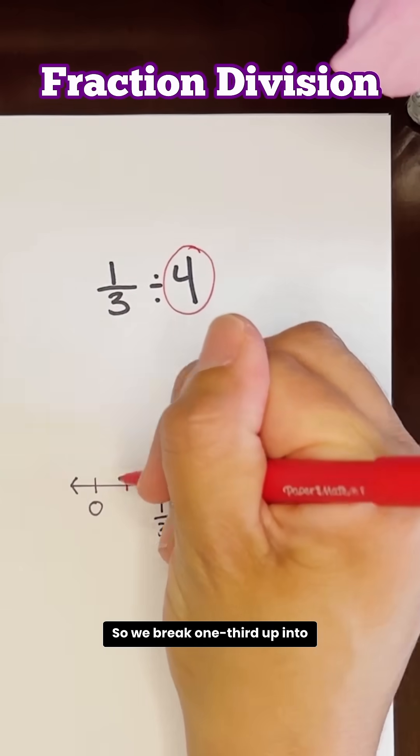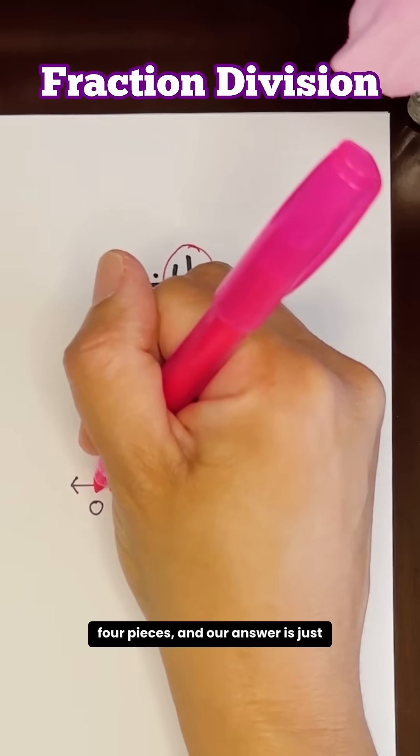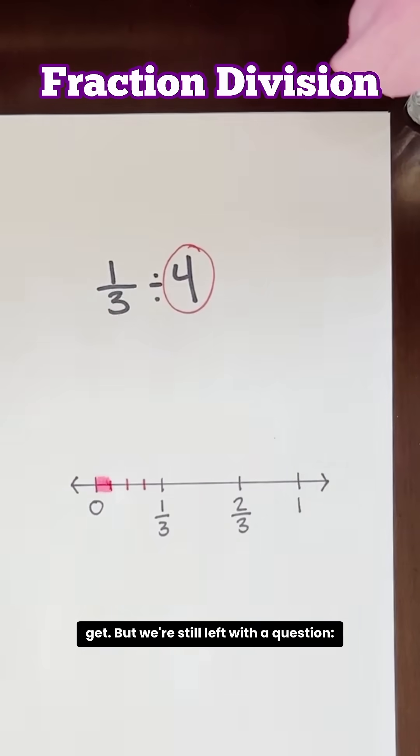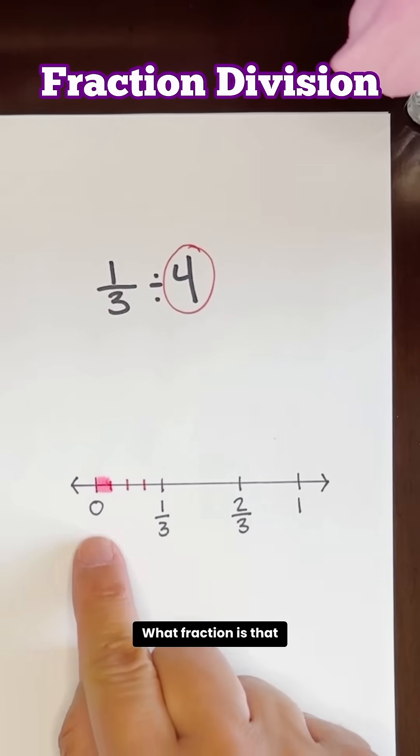So we break one-third up into four pieces and our answer is just one of those, what one person would get. But we're still left with the question, what fraction is that of one whole?